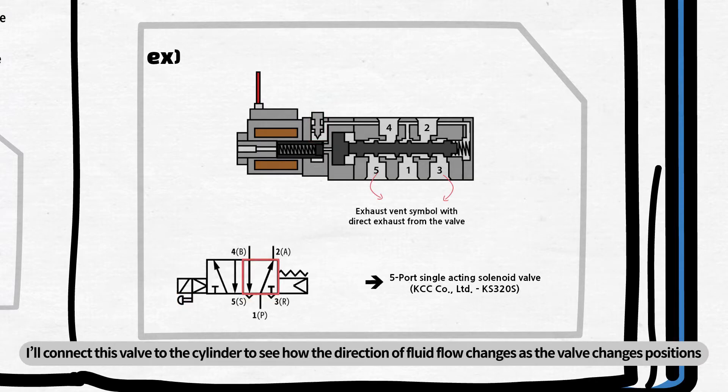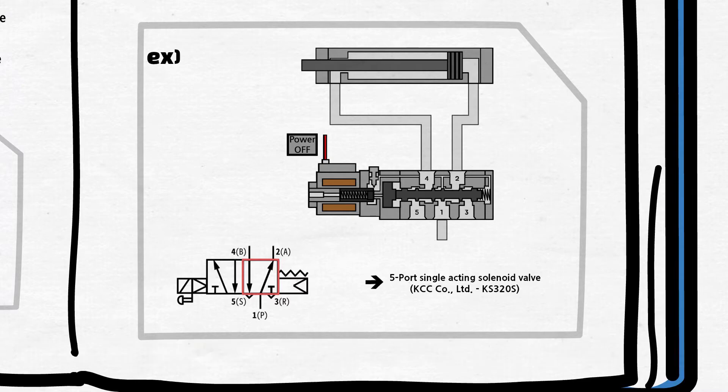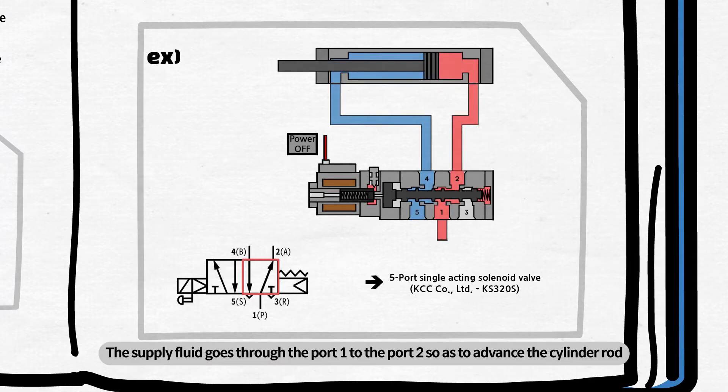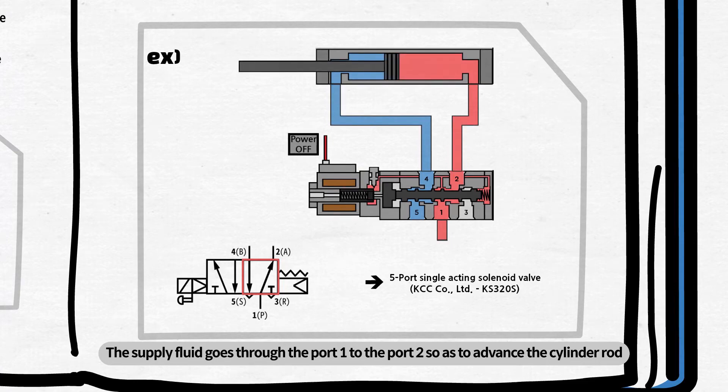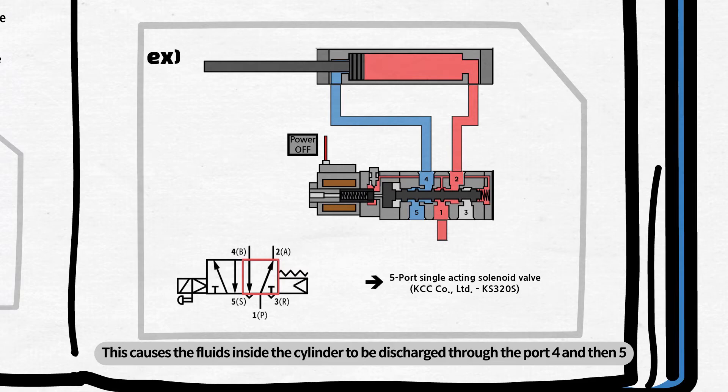I'll connect this valve to the cylinder to see how the direction of fluid flow changes as the valve changes positions. The right-hand side symbol, which is currently in an initial state, has been activated. The supply fluid goes through the port 1 to the port 2 so as to advance the cylinder rod. This causes the fluids inside the cylinder to be discharged through the port 4 and then 5. Port 3 is being blocked by a spool.